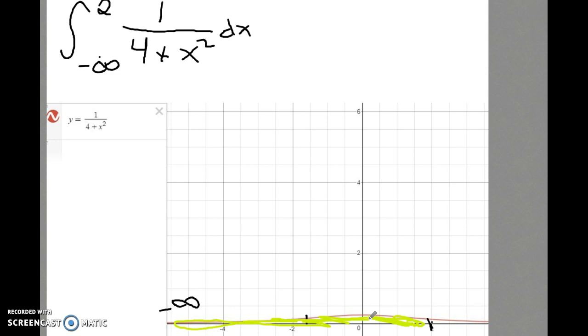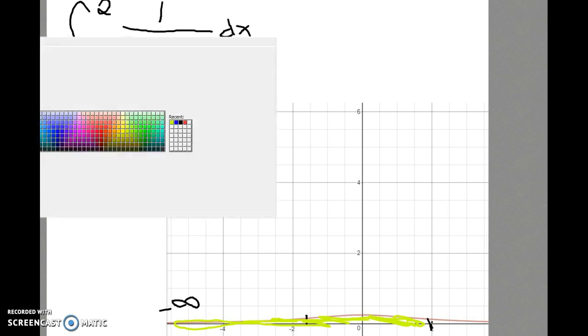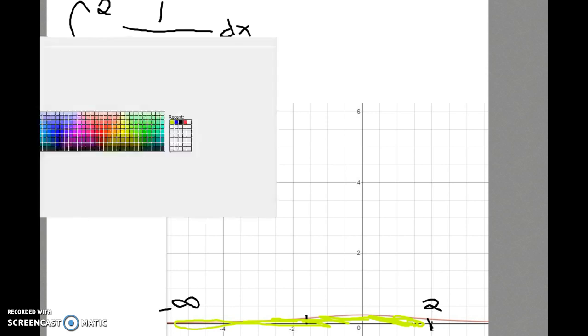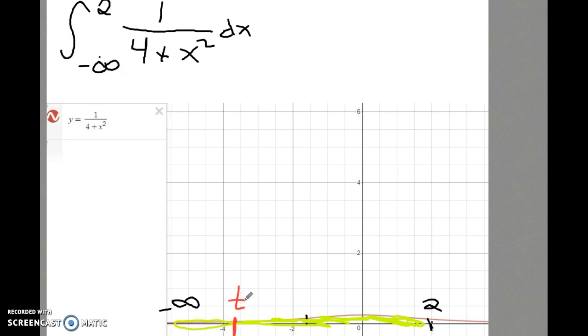If you picture investigating the value of this improper integral by creating a table where we find the area under the curve somehow, we can't go all the way to negative infinity. So what we do is we set up a left-hand boundary, let's call it T, and we find the area under the curve from T to 2.